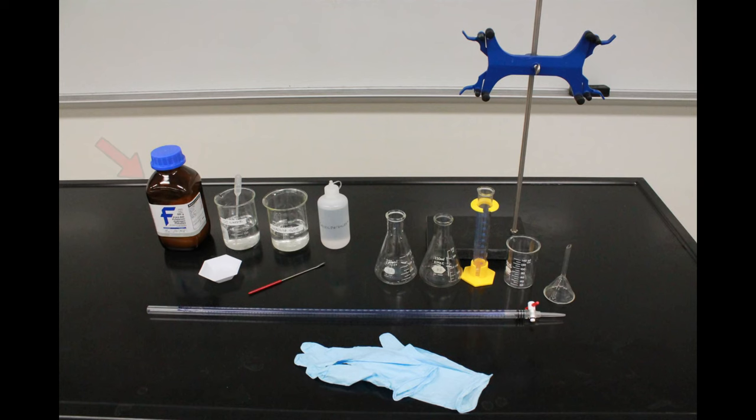Here's what you're going to need. A bottle of KHP, a weigh boat for the KHP powder, a spatula, some deionized water, make sure not to use tap water, your unknown concentration of NaOH, phenolphthalein. I think you're already familiar with this indicator by now.